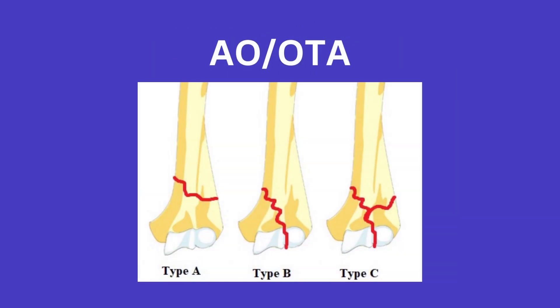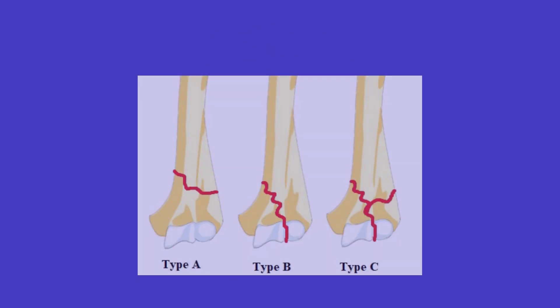As a side note, the AO/OTA general classification for fractures states that A is an extraarticular, B is a partial articular, and C is an intraarticular fracture.